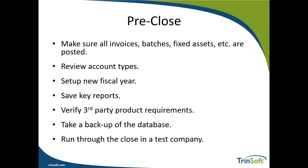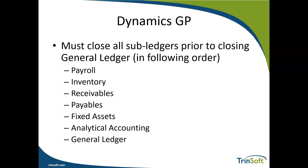If you run into an issue during the test close, please reach out to your Trimsoff team — we'll be happy to jump in and get you going in the right direction. Now let's dig into the actual GP year-end close process. As you begin to close the year, it's important to note that the order of closing the various modules matters. Microsoft recommends the order outlined here from top to bottom: first is payroll, followed by inventory, receivables, payables, fixed assets, analytical accounting, and finally the general ledger.